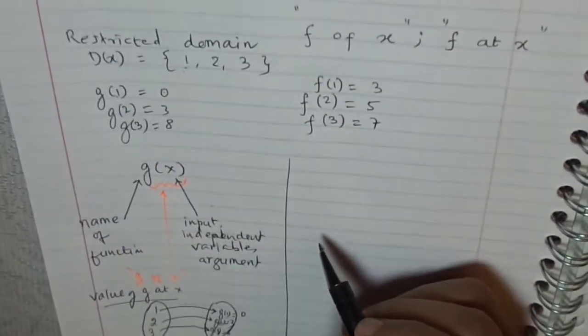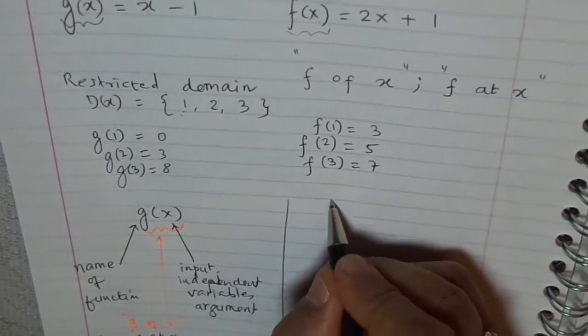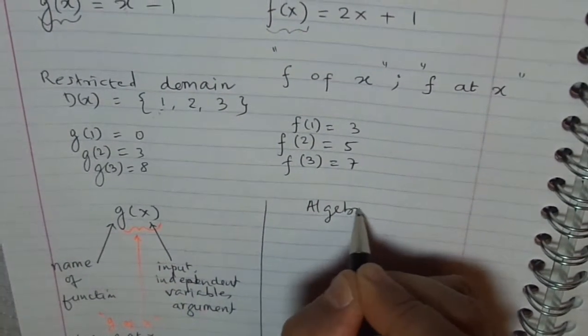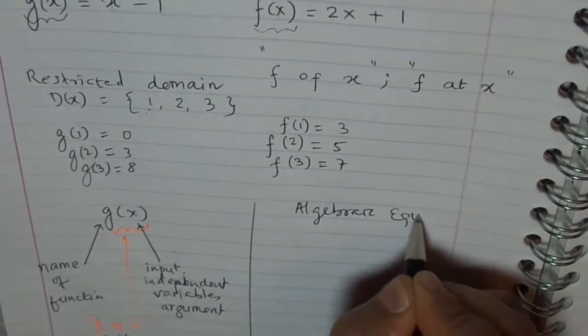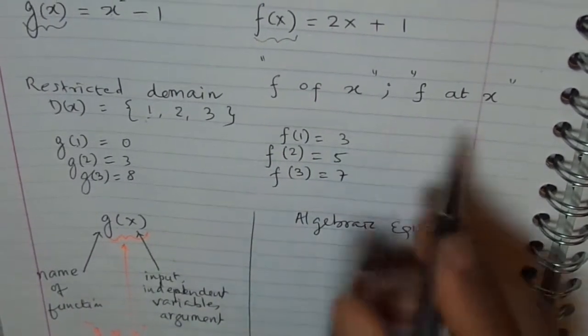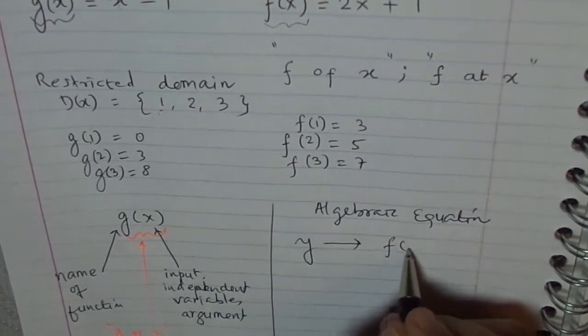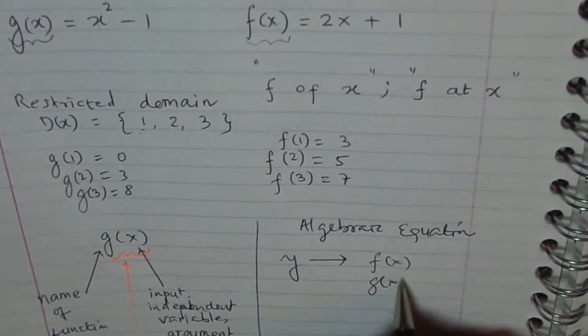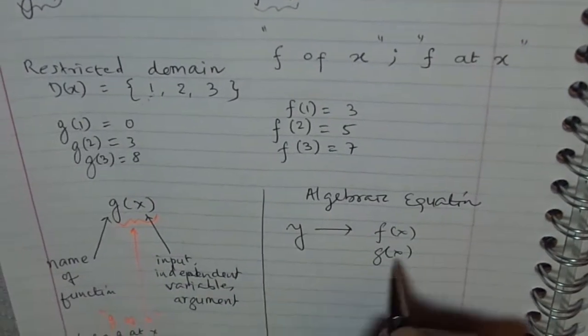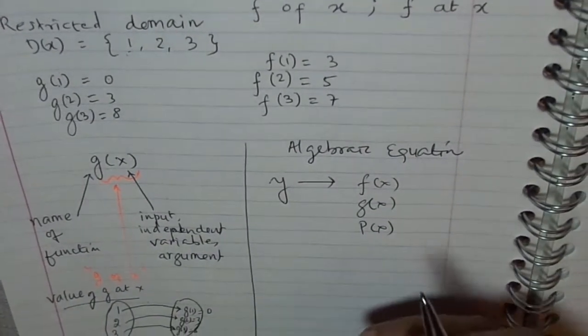As you have seen above in these algebraic equations, to write them in the form of function notation, you basically change y to f(x), or g(x) for that matter. It could be anything. You can write this p(x) or anything.